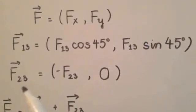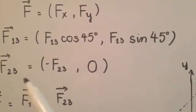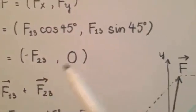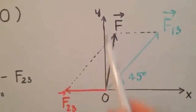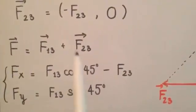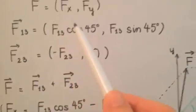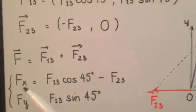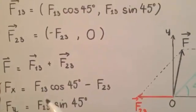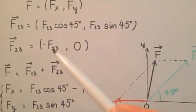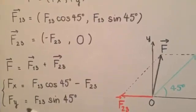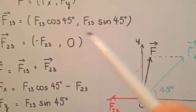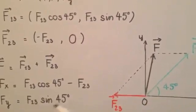Similarly, we can find the components of F23: minus F23 and 0. Look at here, F23 doesn't have a Y component. So when we add two vectors, we simply add their components. Fx ends up with F13 cosine 45 plus minus F23, and Fy equals F13 sine 45 plus 0, which means F13 sine 45.